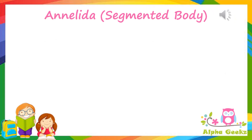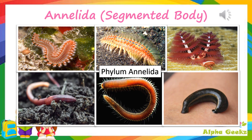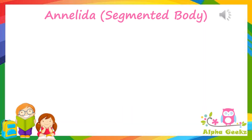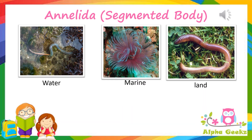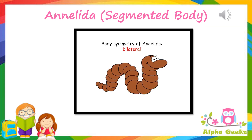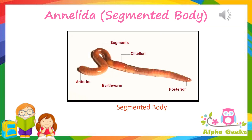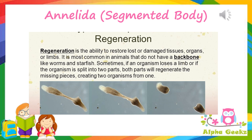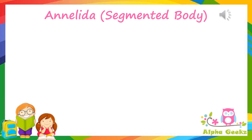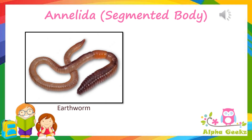Annelids: phylum Annelida is a very broad phylum belonging to the kingdom Animalia. Annelids are found in aquatic as well as terrestrial environments. These are bilaterally symmetrical invertebrates. The segmented body distinguishes them from any other organism. Regeneration is a very common characteristic of the annelids. Examples of annelids include earthworms and leeches.